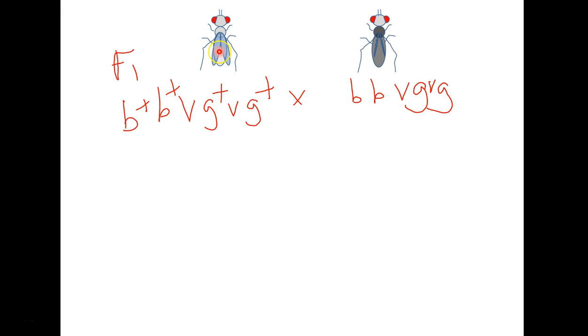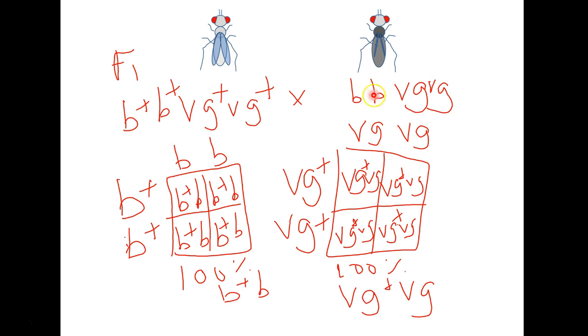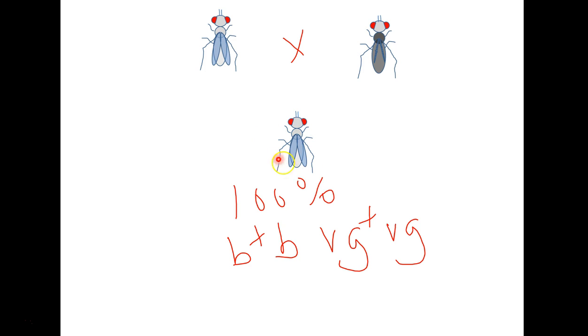So what Morgan did was he took this wild type fruit fly, he crossed it with this recessive for both phenotypes and for the F1 cross, what did he get? So if you take the Bs and you just cross the Bs, you get 100% heterozygous, B plus B, still gray. And if you take the VGs, you get the same thing, 100% heterozygous, normal wings. So it actually looks just like the wild type. Now it is going to be heterozygous or hybrid for both traits. So the offspring are going to be wild type with one key difference. They are going to be heterozygous for each trait, B plus B, VG plus VG.